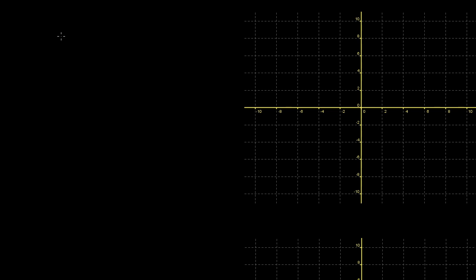Let's say I have three position vectors in R2. My first position vector is x0, and it is equal to minus 2, minus 2. So if I were to graph x0, I'd go minus 2, minus 2. x0 looks like that.